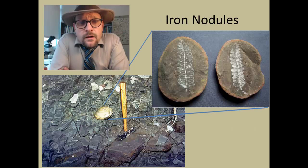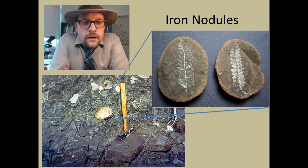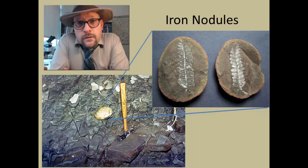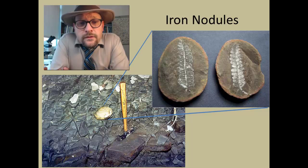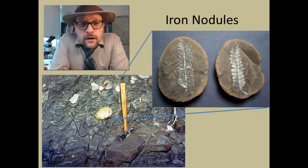Another place that fossil plants are often found are in iron concretions. The most famous locality where iron concretions are found is the Mazon Creek locality, where you find these concretions, break them apart, and often find plant material within them. It may be the actual plants that laid down and got surrounded by these concretions, which helped form and protect them from the surrounding mudstones.